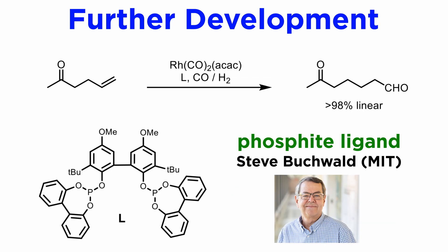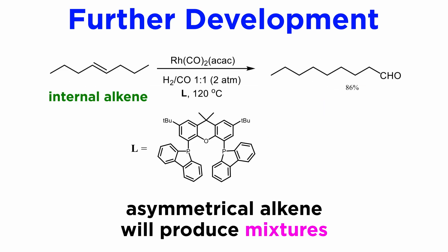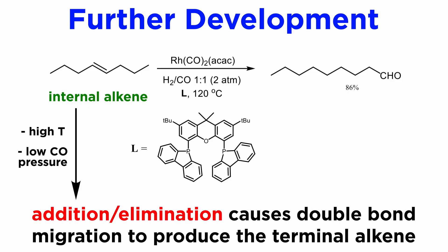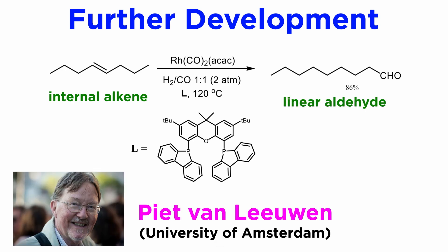Lately, phosphite ligands have yielded exceptional selectivities for terminal olefins. Here is an example from the labs of Steve Buchwald at MIT, where essentially complete selectivity was obtained. A specialty area is the hydroformylation of internal alkenes. If the alkene is asymmetrical, mixtures inevitably arise. In some cases, at high enough temperature and under very low CO pressures, rhodium hydride addition and beta elimination can lead to migration of the double bond faster than hydroformylation. Given that terminal olefins are hydroformylated much more rapidly than internal ones, linear products can sometimes be obtained, as in this example by Pete van Leeuwen working at the University of Amsterdam.